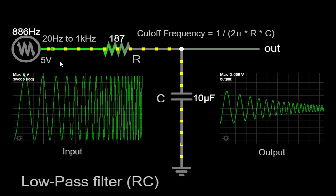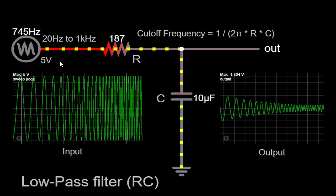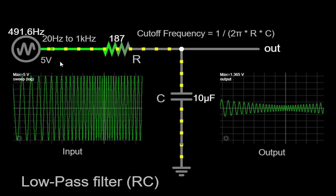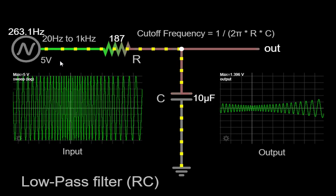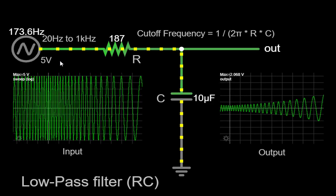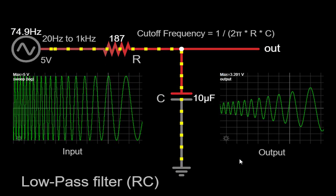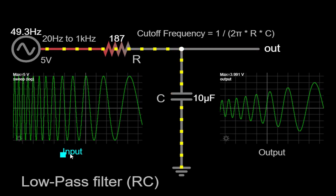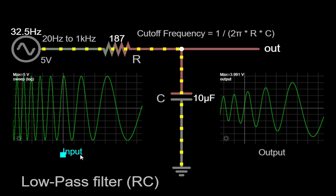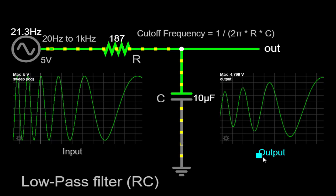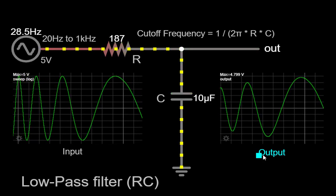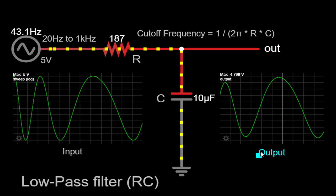On the screen in front of you, we have the circuit simulator running, and we have connected a scope to both the input and output of the circuit. This scope allows us to visualize and compare the input and output waveforms simultaneously. The input signal represents the original waveform that we are feeding into the circuit, while the output signal represents the resulting waveform after it has passed through the low-pass filter.